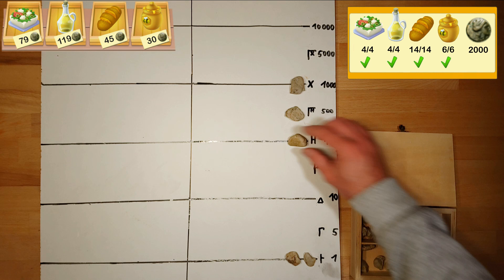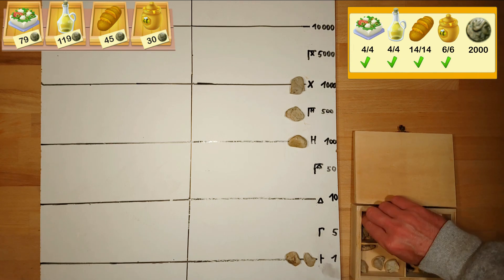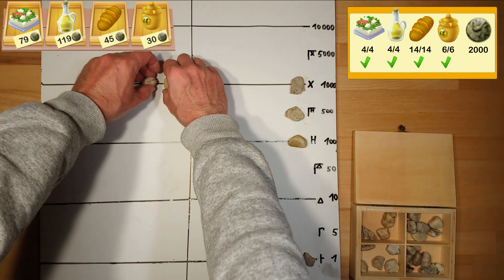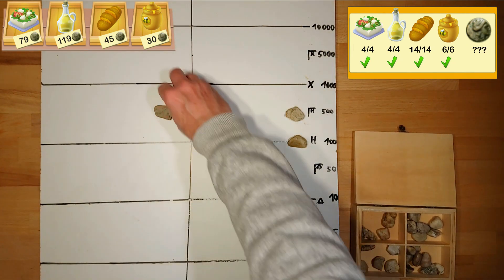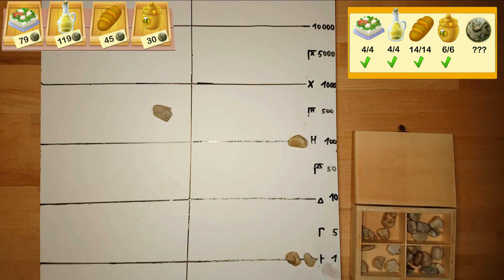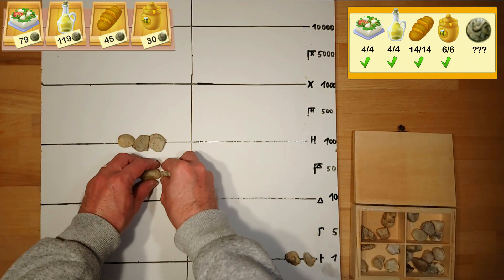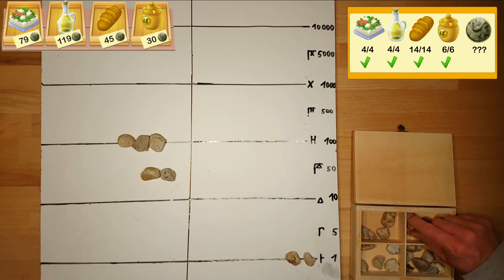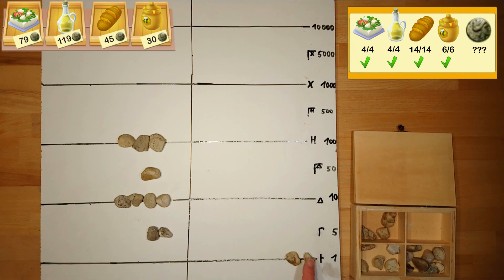Okay finished. The combined price for all goods is 1602 coins. We pay with our 2000 coins and now we have to calculate how much money we get back. The change is 398 coins.